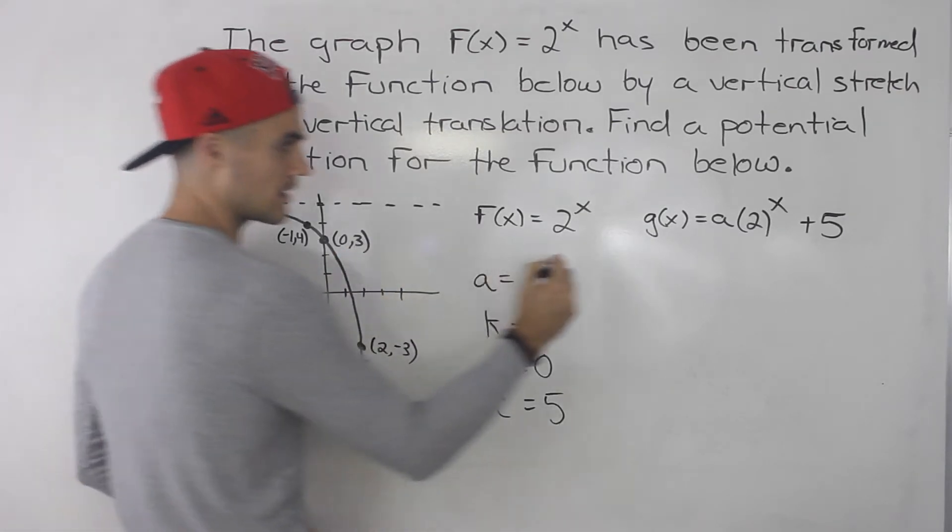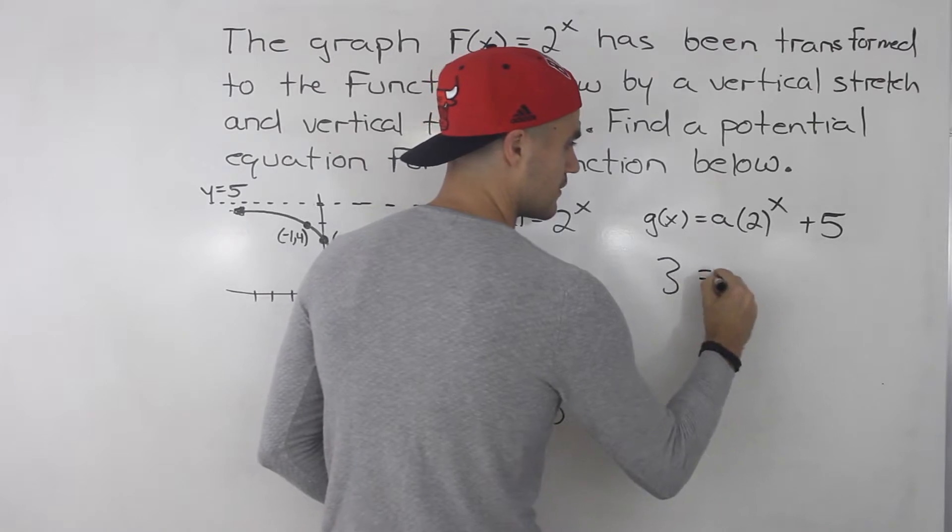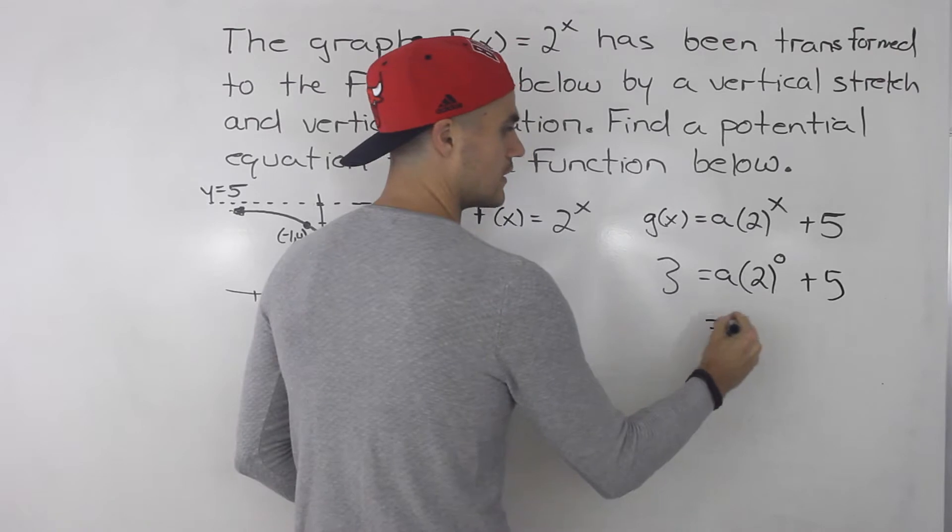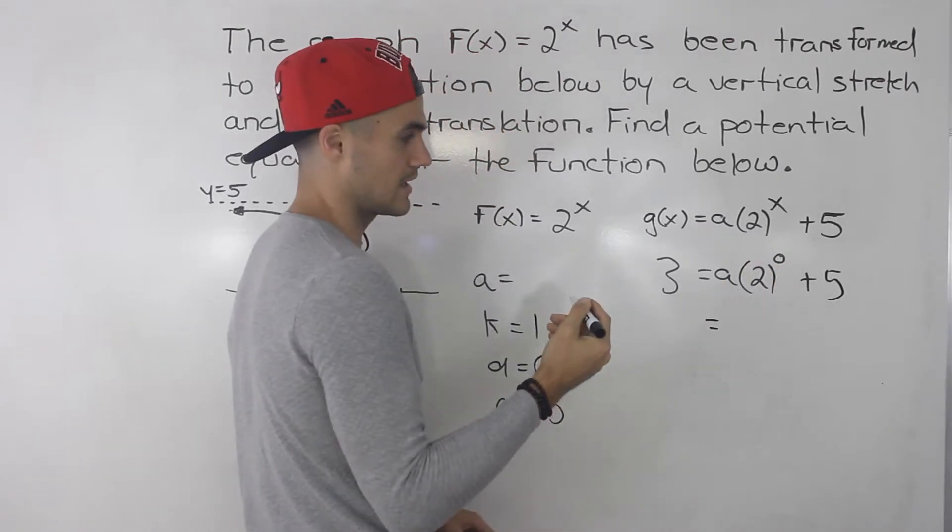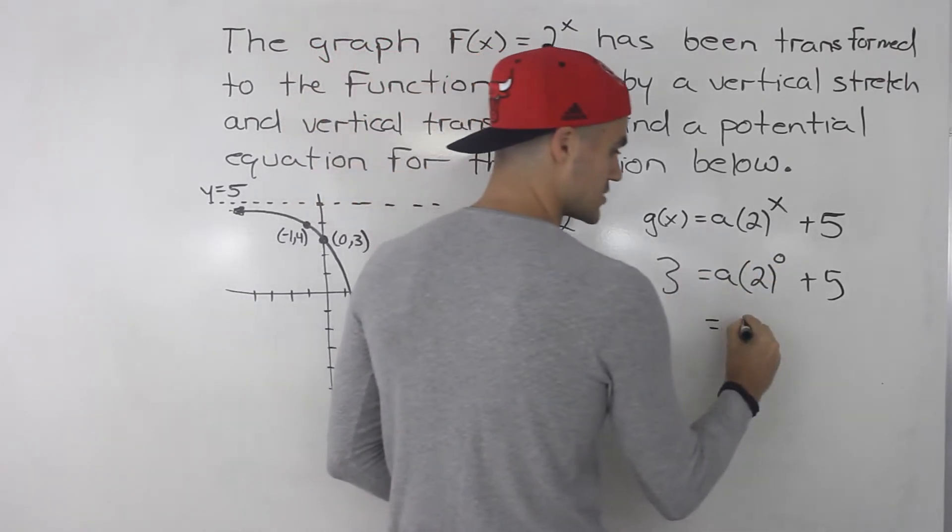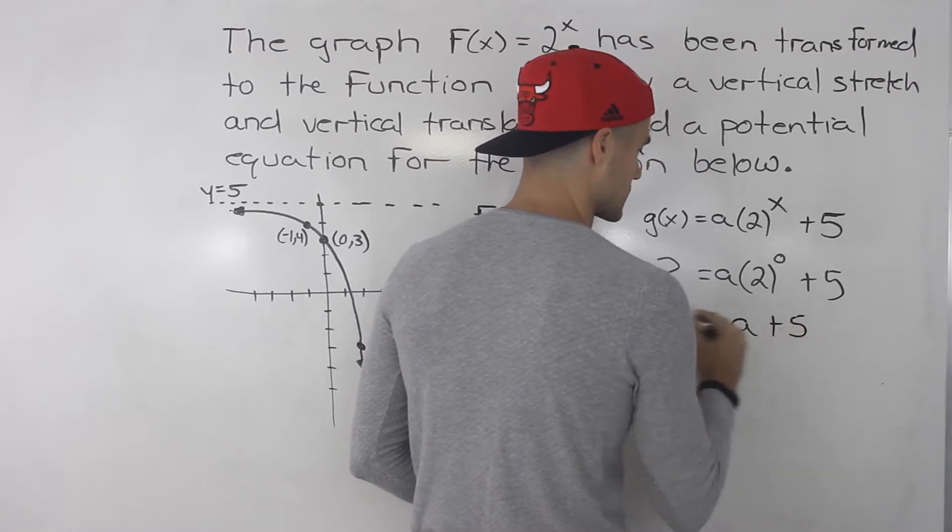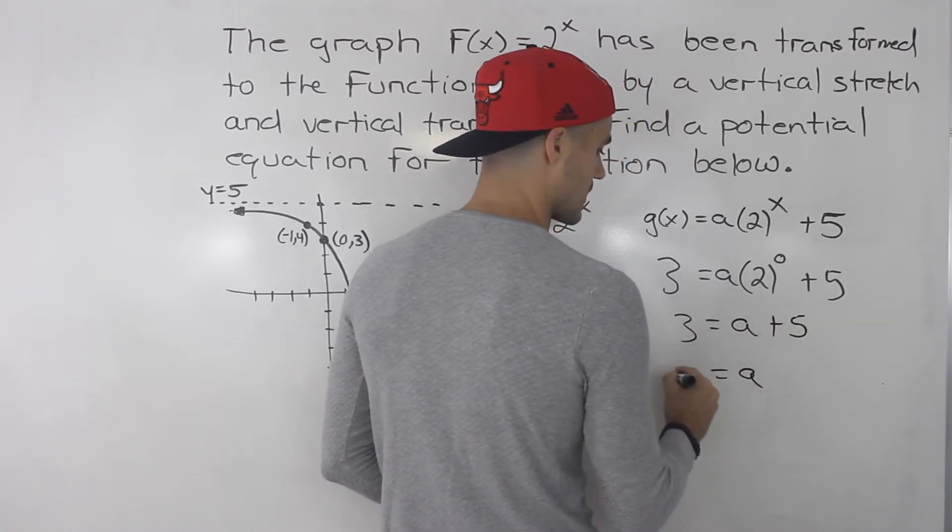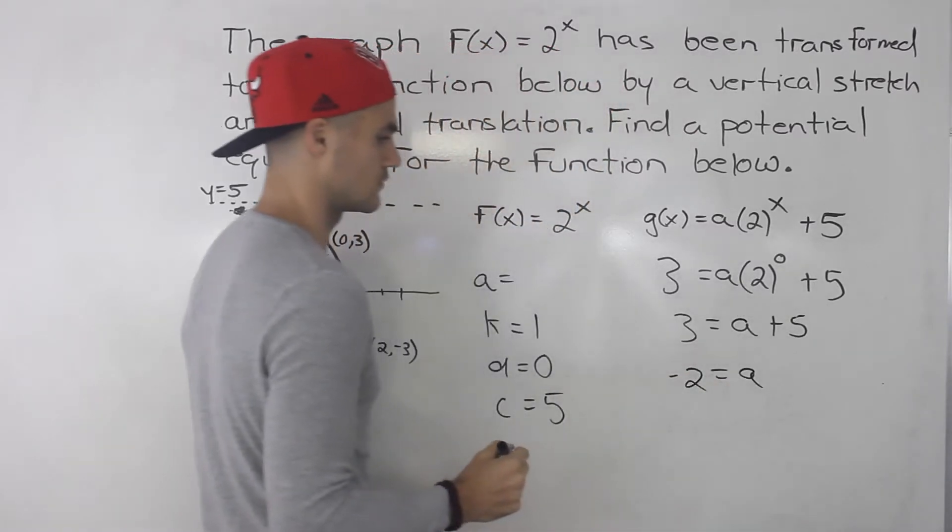So we would plug in 3 for y. The a we're solving for will have 2 to the power of 0 plus 5. 2 to the power of 0 is just 1, so 1 times a is just a, so we'll have a plus 5 equals 3. When you bring the 5 over, 3 minus 5 gives us -2 for a.